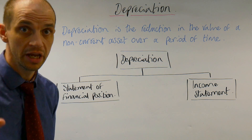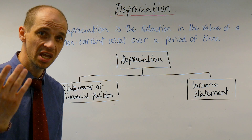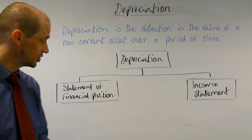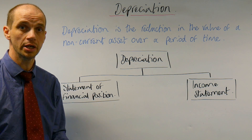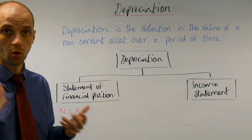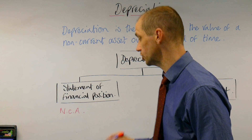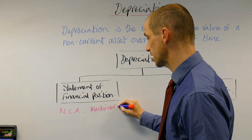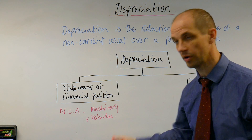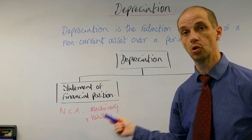It tends to be machinery or vehicles as the primary examples, and this will take place over a period of time. The business needs to determine at what rate they will wish to depreciate the value of those assets. When it comes to the statement of financial position or balance sheet, those non-current assets — the longer-term fixed assets like machinery and vehicles — will be depreciated over time. You will expect to see lower values in future periods, assuming no more vehicles or machinery have been purchased. So depreciation will simply reduce the value of those non-current assets.